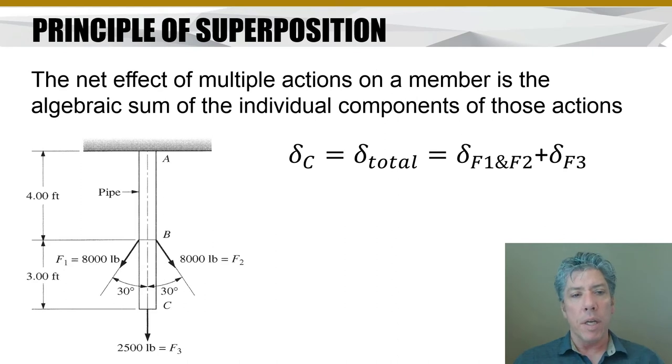If you think about the deflection of point C, obviously it's going to move down. So the total deflection is simply going to be the deflection due to F1 and F2, but also the deflection due to F3. If we could calculate what the deflection of point C would be just under the action of F3, and then add to that the deflection of that point under the influence of F1 and F2, and I've grouped them together, but technically each could have a separate turn.